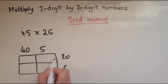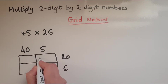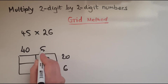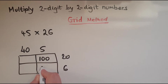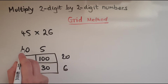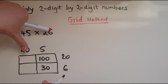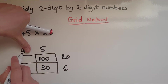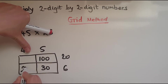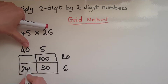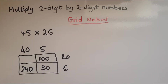5 lots of 20 makes 100. 5 lots of 6 makes 30. For 40 lots of 6, we hide the 0 first — 4 times 6 is 24 — then add the 0 back, giving 240, because when you multiply by 10 you add a 0 at the end of the whole number.